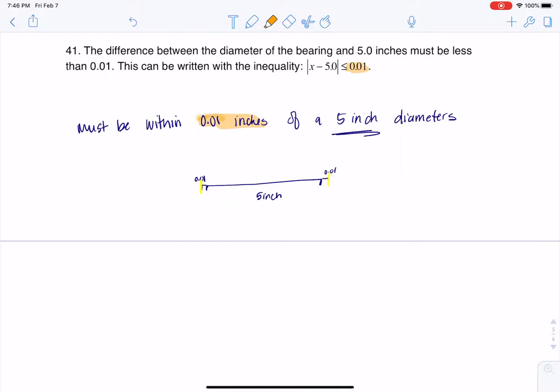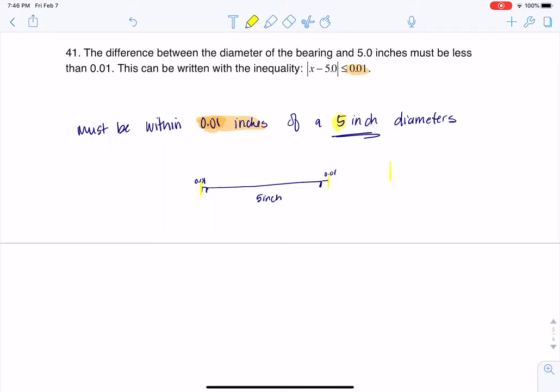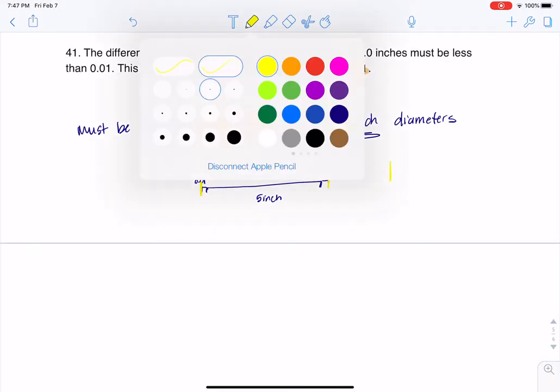And I can only be 0.01 inches off from 5 inches. So as long as my bearing that I make is less than 0.01 inches away from 5 inches, I'm good to go. And how we represent that distance is we say X. Let me turn this back to purple.